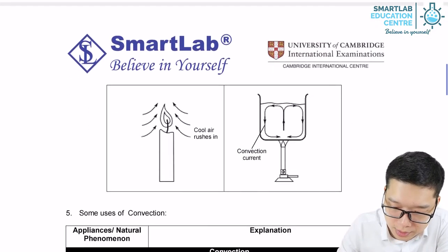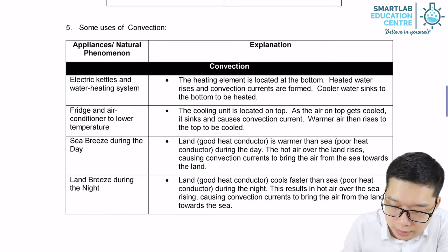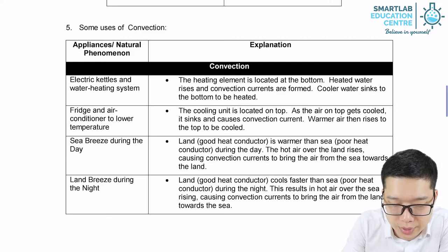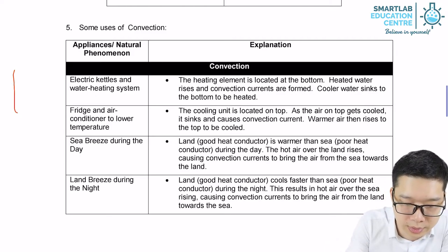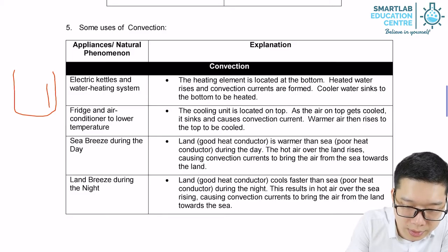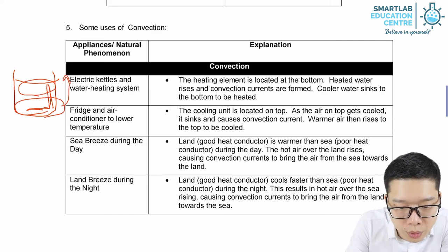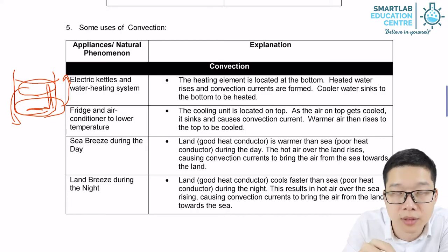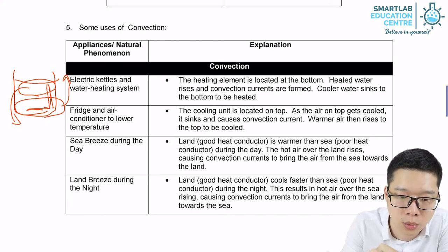Let's look at some examples. If you use an electric kettle for heating water, normally the heater will be underneath. It heats up the water underneath, hot water goes up, cold water comes down. It forms a convection current and eventually the whole water body will be heated.